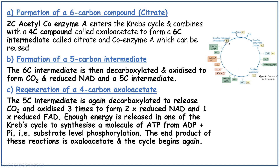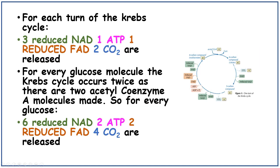Finally, there is regeneration of the four-carbon compound. The five-carbon compound is decarboxylated, releasing carbon dioxide, and oxidised three times to form two reduced NAD and one reduced FAD. Enough energy is released to synthesise one molecule of ATP from ADP and Pi — this is known as substrate-level phosphorylation. The end product is oxaloacetate, and then the cycle begins again. For each turn of the Krebs cycle, three reduced NAD, one ATP, one reduced FAD, and two carbon dioxide are produced.